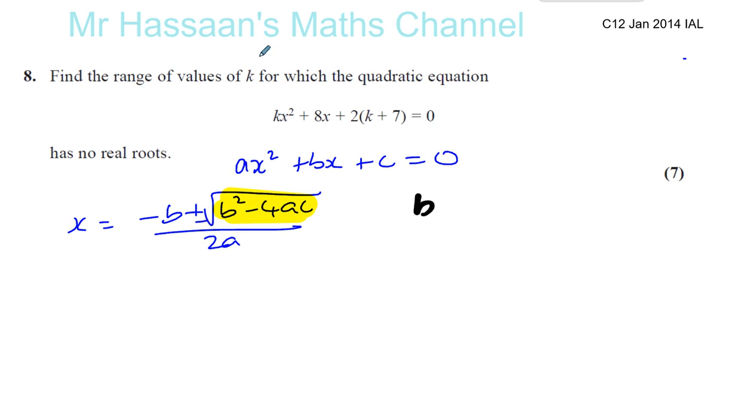If the discriminant, b squared minus 4ac, is greater than 0, then you're going to have two solutions. You have minus b plus or minus something over 2a. So you'll have two separate solutions: minus b plus that over 2a and minus b minus that over 2a.